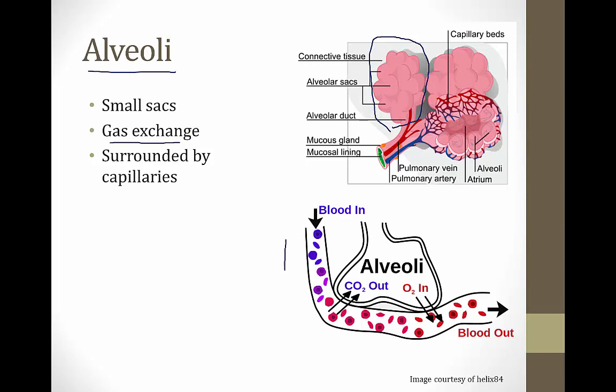Blood comes in and releases CO2 into the alveoli, then picks up oxygen with the red blood cells and carries it out to the heart and the rest of the body.